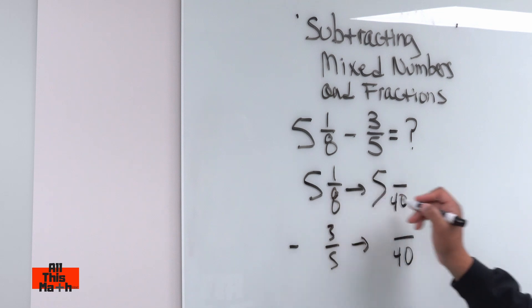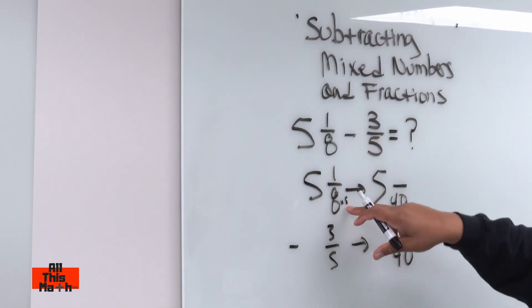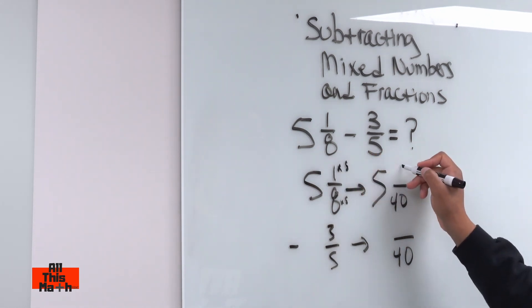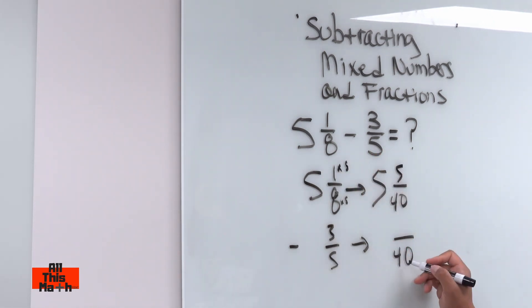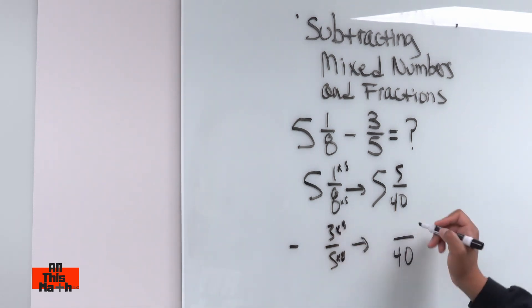Now, the eight turns into a 40 because we did eight times five. So, we got to be consistent. If I multiply by five at the bottom, I got to multiply by five on top. So, one times five is five. Now, the five turned into a 40 by multiplying by eight. So, if I multiply by eight on the bottom, I got to multiply by eight on top. So, three times eight is going to be 24, and you got to have your multiplication facts memorized. So, this could be easy to do.